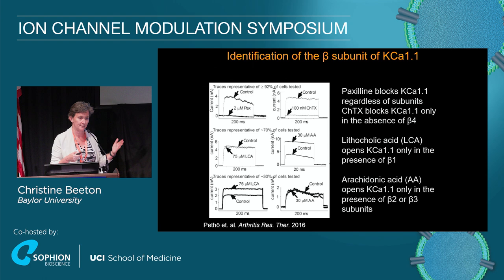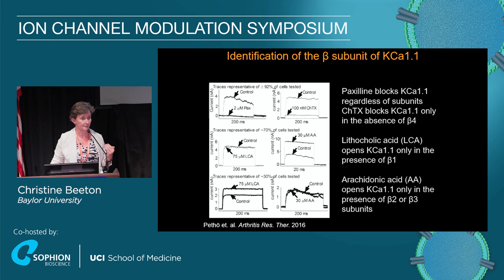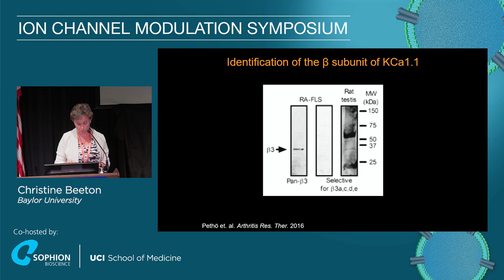We stained the patched cells for markers of aggressiveness. The 70% of cells that responded to arachidonic acid are actually the aggressive ones. The 30% that responded to lithocholic acid are the non-aggressive, minimally invasive cells — the kind we find in patients with osteoarthritis where FLS are not activated. So that told us it was either beta-2 or beta-3. Beta-2 changes the kinetics of the channel quite dramatically, which we do not see in those cells, so we most likely had a beta-3 subunit in the aggressive cells.